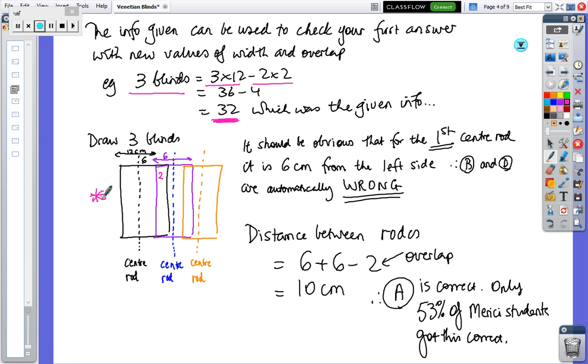And if you have a look at the black, the width is 12 centimeters, so the width from the edge is going to be 6 centimeters. So it should be obvious that for the first center rod, we are 6 centimeters. So that means that B and D, which both had 5 centimeters from the left, so automatically they are the wrong answers.